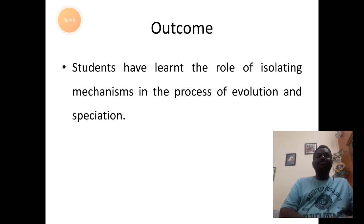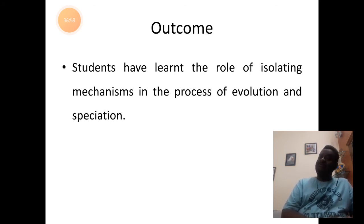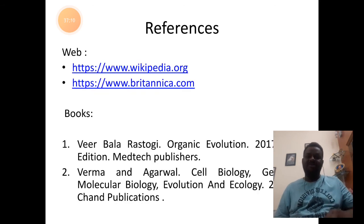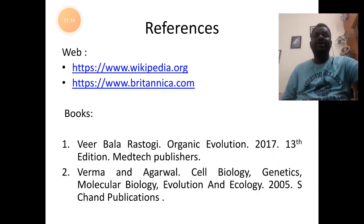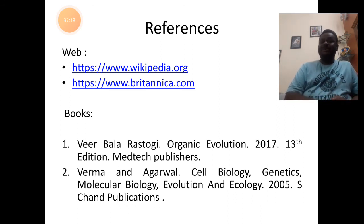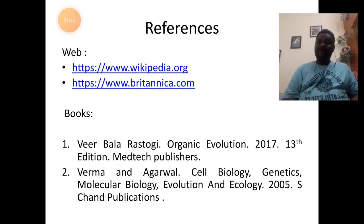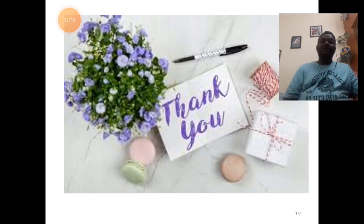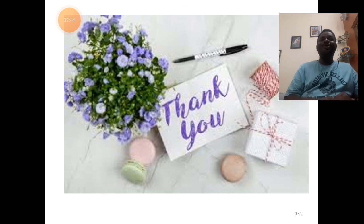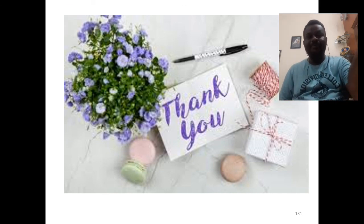With this we are completing reproductive isolation as a force behind speciation. We have learned the role of isolating mechanisms in the process of evolution and speciation, especially related to reproductive isolation and geographic isolation. References include Wikipedia and Britannica.com, and book references include Organic Evolution by Vir Bala Rastogi and Cell Biology, Genetics, Molecular Biology, Evolution and Ecology by Verma and Agarwal. Thank you all students — please post your comments and queries and take care of your health during this pandemic time.